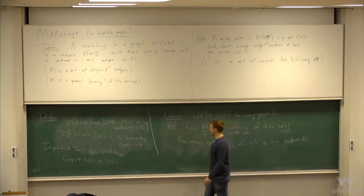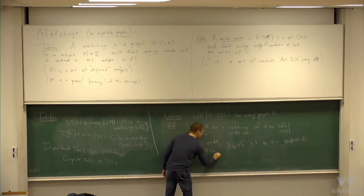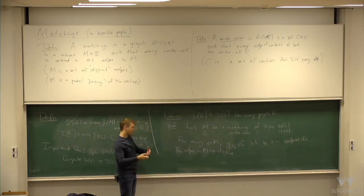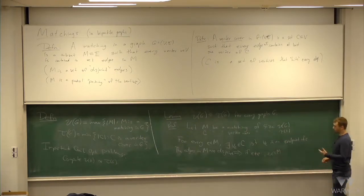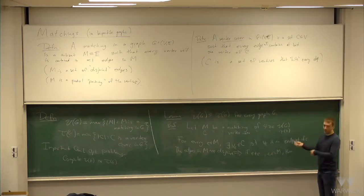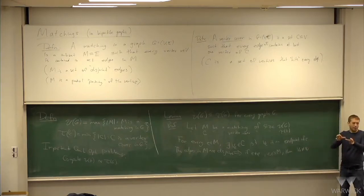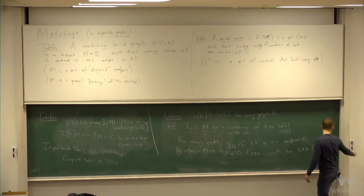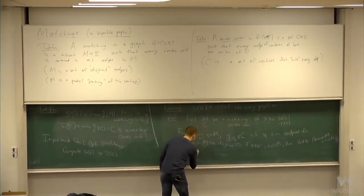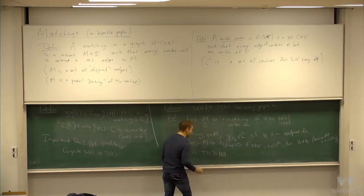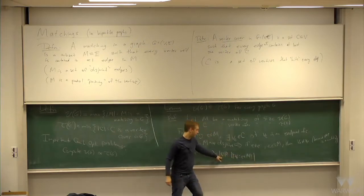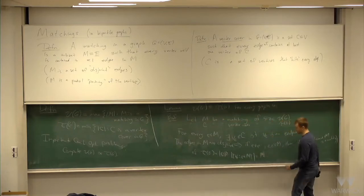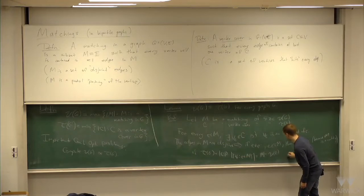This vertex cover hits every edge of M. But the edges in M are disjoint, so if e and e' are two distinct edges in M, then v_e must be different from v_{e'}, because if it wasn't, they'd have an endpoint in common — but it's a matching. Therefore tau of G, which equals the size of C, is at least as large as the number of distinct representatives, which equals the size of M. And that equals nu of G, which is exactly what we wanted to prove.